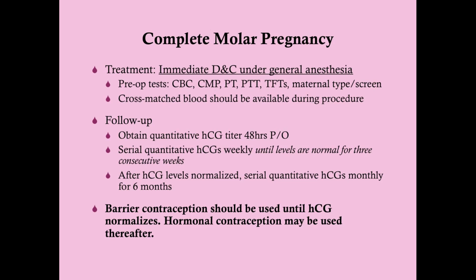Follow-up is important to monitor for persistent or invasive mole. First, get a quantitative HCG as a baseline 48 hours after the D&C. Then follow with serial quantitative HCGs every week, charting to ensure HCG is declining as expected. Continue weekly HCGs until levels are normal for three consecutive weeks. After that, do them every month for six months, and the level should stay in the normal range. If levels come back up or plateau, we are concerned about invasive disease and need to change our approach.